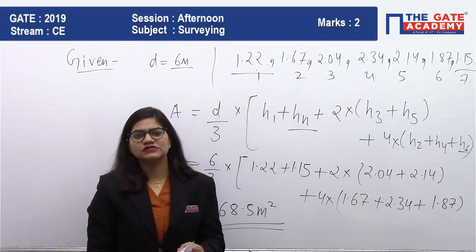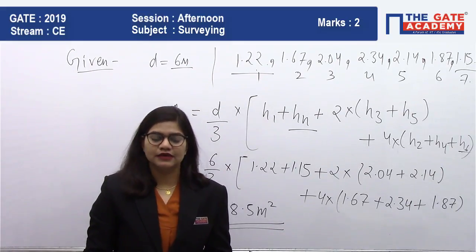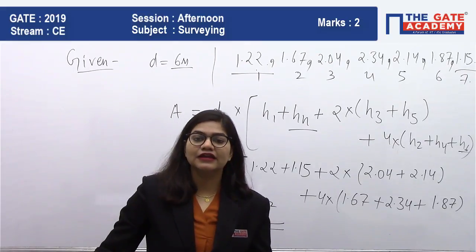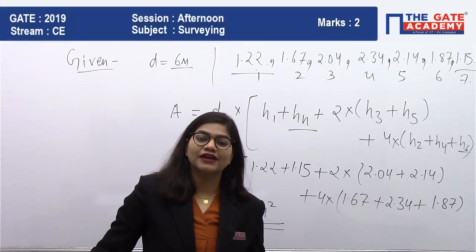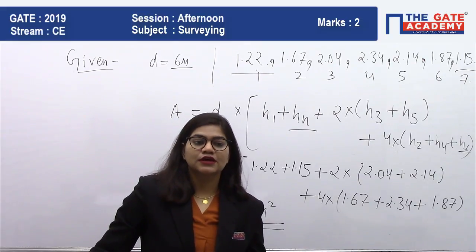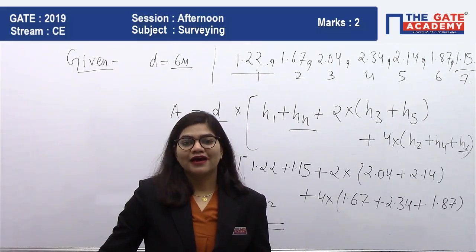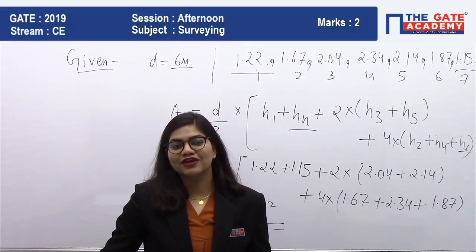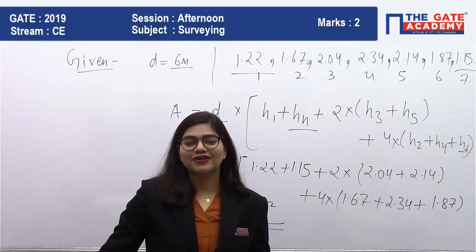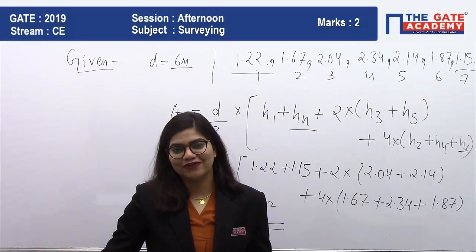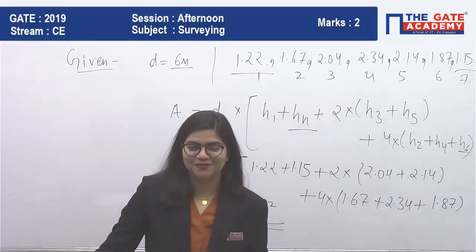So the answer is 68.5 meter square. This question was slightly easy — you can directly apply the formula and solve it. I hope you liked the video. Don't forget to share it with your friends. Thank you.